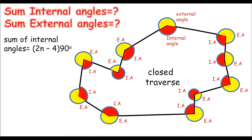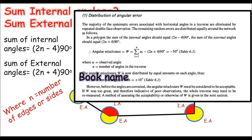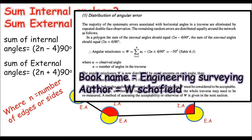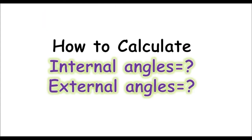For this we have a formula: the sum of internal angles equals (2n − 4) × 90°, and for external angles we have (2n + 4) × 90°, where n represents the number of edges or sides of a traverse. For the reference of these formulas you can study the book Engineering Surveying by W. Schofield. In this screenshot you can see that in a polygon the sum of internal angles equals (2n − 4) × 90° and the sum of external angles equals (2n + 4) × 90°.